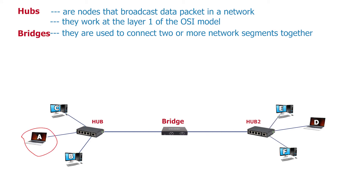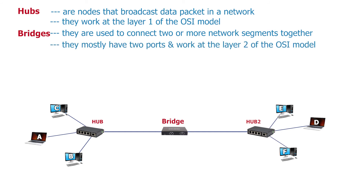On the other hand, if a host sends a packet to another host within the same segment, the bridge will also receive this packet but will not forward it to the other side of the segment. This is because bridges learn by media access addresses, commonly called MAC addresses, of the destination host to determine which side of the network the destination host belongs before deciding to forward the packet or not. Lastly, bridges usually have two ports and work at layer 2 of the OSI model.